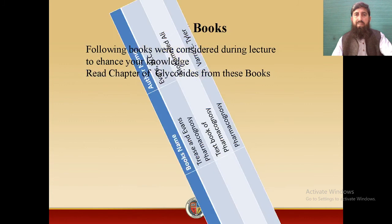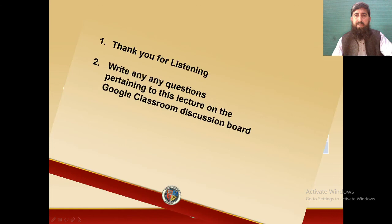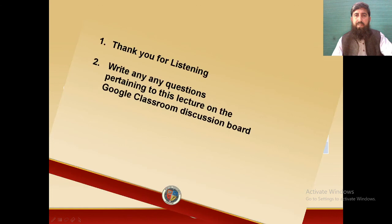I always recommend going through these books for more authenticated knowledge, as these textbooks are very useful sources. The following books were consulted during this lecture: number one, Trees and Iman Pharmacognosy by Evan W.C.; the second book, Textbook of Pharmacognosy by Muhammad Ali; and the third one, Pharmacognosy by Varro E. Tyler. Thank you for listening. Write any questions pertaining to this lecture on the Google Classroom Discussion Board. Jazakallahu khair.